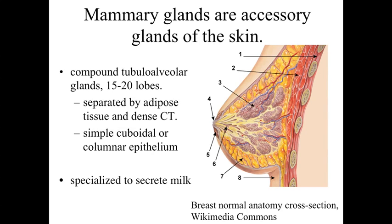That finishes up the organs associated with the female reproductive tract. We're also going to have an accessory gland within the female reproductive system — these are going to be the mammary glands. We're going to be looking at accessory secretory structures that are mainly derived from the skin. These are going to be compound tubulo-alveolar glands — a tube-like structure at the beginning, closer to where they release their secretory product, and then deeper within, they go into alveoli or clusters of secretory cells. Within the mammary gland itself, there are going to be anywhere from about 15 to 20 lobes of these secretory units, which are going to be separated by white adipose tissue and dense connective tissue.